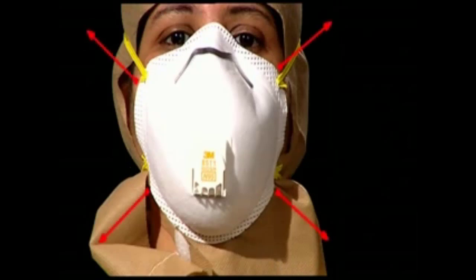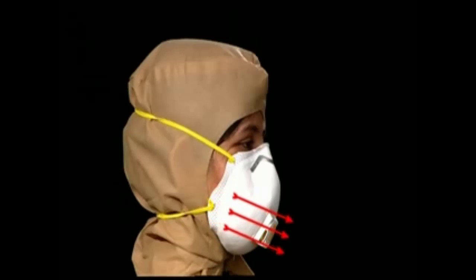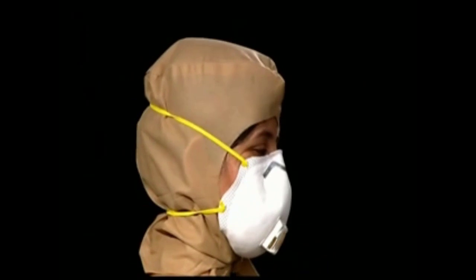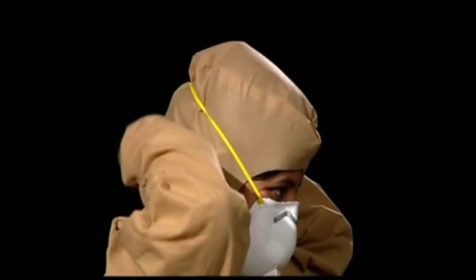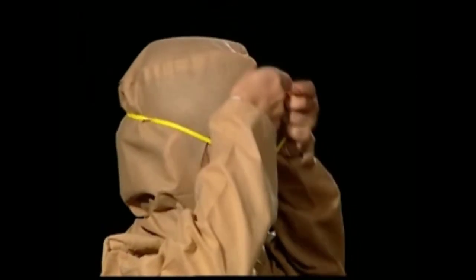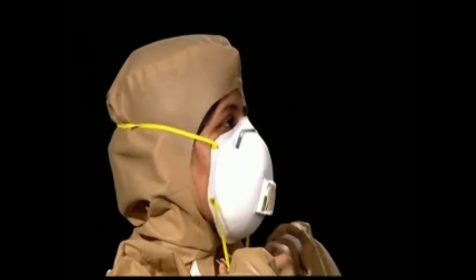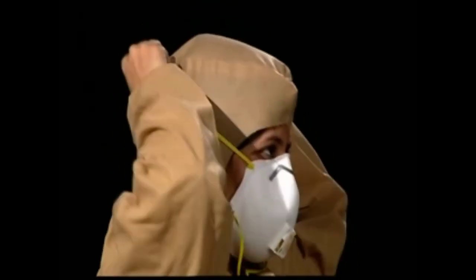In the case of the N95 respirator mask, roll your fingers beneath the band of the respirator and remove the lower strap first by bringing it over your head. Follow the same process and get the upper strap over your head. Without touching the frontal area of the mask, discard it into the biohazard bag.